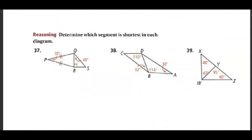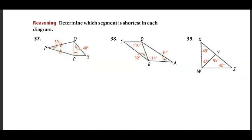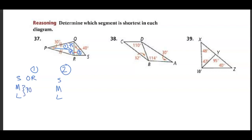Now we're going to determine which segment is the shortest in each diagram. I'm going to call this triangle 1 and triangle 2. In triangle 1, if this angle is 30 degrees, and because it's an isosceles triangle, each of the other angles is 75 degrees. So OR is the small side, and PO and PR are tied.